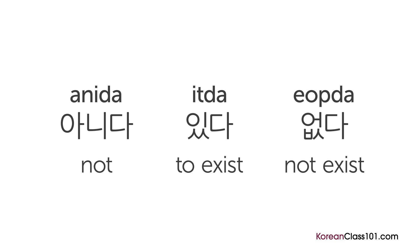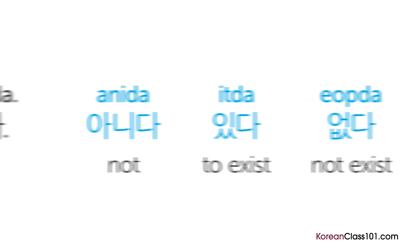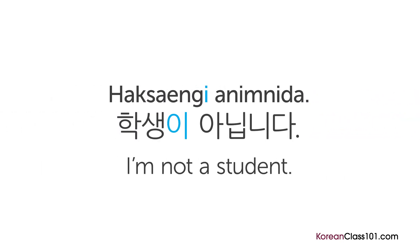There are certain verbs that use the subject marking particles as part of a set. Some common verbs are 아니다, 있다, and 없다, which mean 'not,' 'to exist,' and 'not to exist,' respectively. Generally speaking, whenever these verbs are used in a sentence, the subject marking particle is used as well to mark what exists and what doesn't exist. For example, 학생이 아닙니다, meaning 'I'm not a student.'